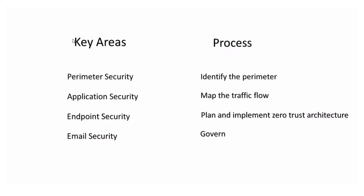Now there are a bunch of mistakes that architects make before implementing a zero trust framework. They do not plan all the vulnerable entry points. These vulnerable entry points include perimeter security — the entry point from the internet-facing devices in your infrastructure. Another key element to include in the plan is application security.